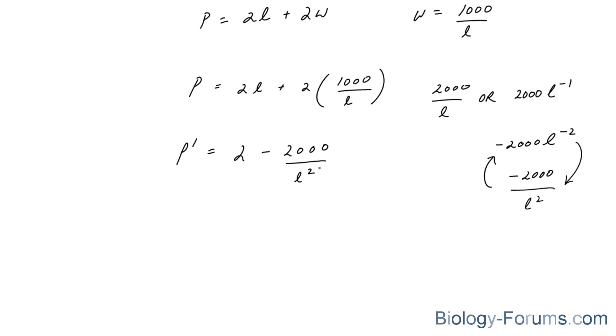As I stated earlier, I need to find the critical points. So I'm going to set this equal to 0. And if I do that, I end up with the following. Negative 2,000 over L squared is equal to negative 2. And since there's a negative on this side, a negative on this side, we can ignore them.